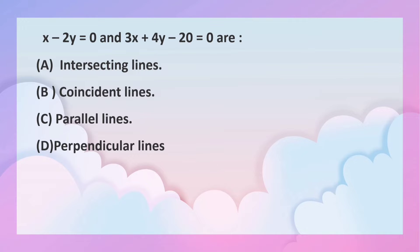x minus 2y is equal to 0 and 3x plus 4y minus 20 is equal to 0. Four options are given. We have to check which one is correct.